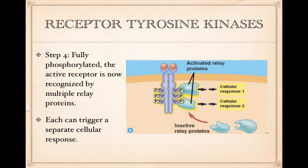In step four, the fully phosphorylated and active receptor can be recognized by multiple proteins called relay proteins, which are part of transduction pathways. Because more than one relay protein can interact with the tyrosine kinase dimer, one tyrosine kinase system can trigger many separate cellular responses. The cytoplasm is full of inactive relay proteins waiting to be switched on by interacting with the fully phosphorylated tyrosine kinase system, which was itself activated by receiving a signal molecule or ligand in the extracellular matrix.